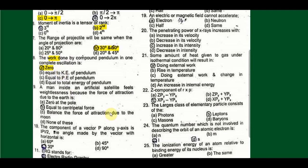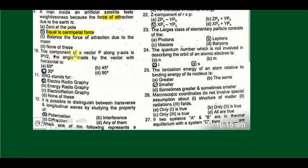A man inside an artificial satellite feels weightlessness because the force of attraction due to earth is equal to the centripetal force. The correct answer is: because the force of attraction is balanced with centripetal force and the condition of weightlessness will be satisfied.